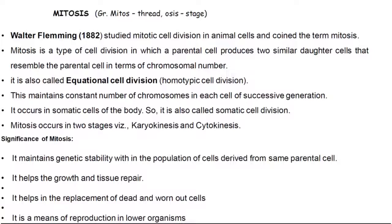Mitosis occurs in somatic cells of the body, so it is also called somatic cell division. Mitosis occurs in two stages: karyokinesis and cytokinesis. The significance of mitosis includes: it maintains genetic stability within the population of cells derived from the same parental cell, helps in growth and tissue repair, helps in the replacement of dead and worn-out cells, and serves as a means of reproduction in lower organisms.